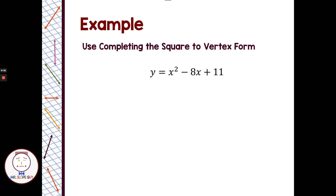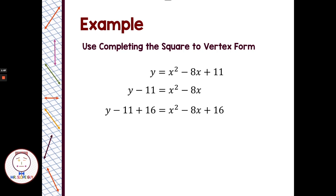To complete the square, I want to start by subtracting 11 from each side. Then I want to take half of negative 8. Half of negative 8 is negative 4, and negative 4 squared is 16, so I'm going to add 16 to the left side and add 16 to the right side to keep my equation balanced. On the right side, in factored form, we have a perfect square trinomial — square of the first, square of the last, sign of the middle — and that factors as x minus 4 quantity squared.